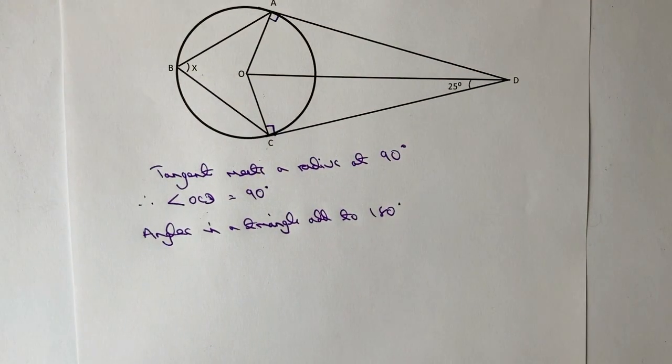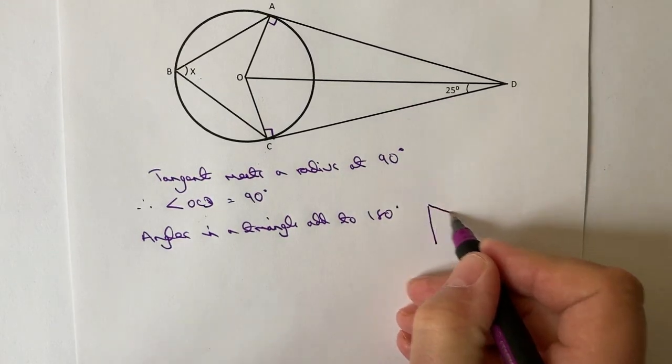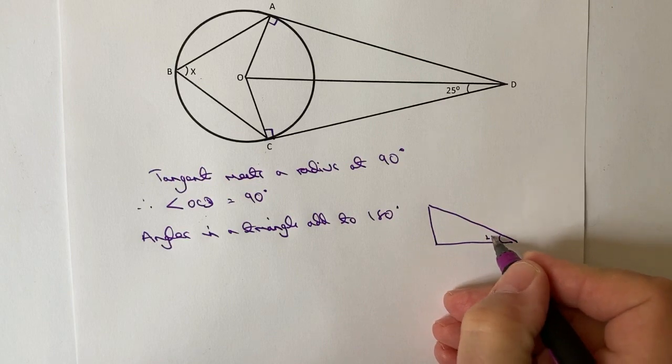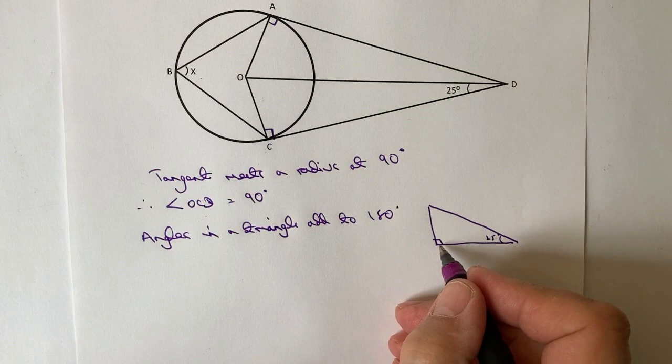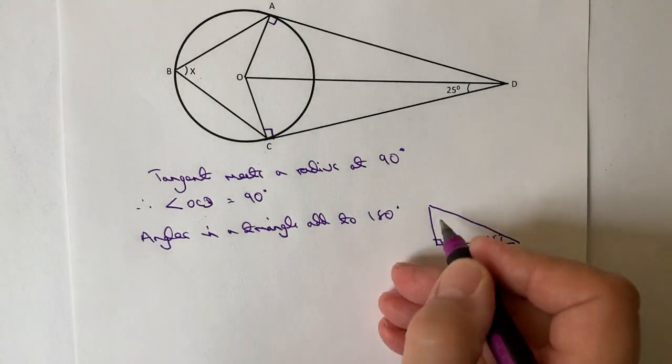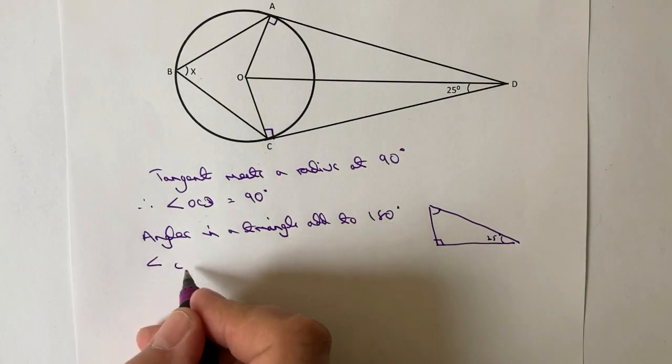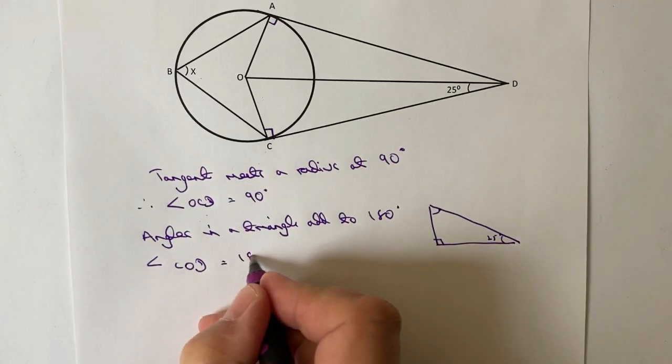Okay, so what I can do if I want, I can do a little sketch that basically reinforces that and I can say that actually this is going to be 25, this is going to be a right angle, we know that therefore 90 plus 25, if we take that away from 180, it's going to give us this angle at the top here which is going to be angle COD.